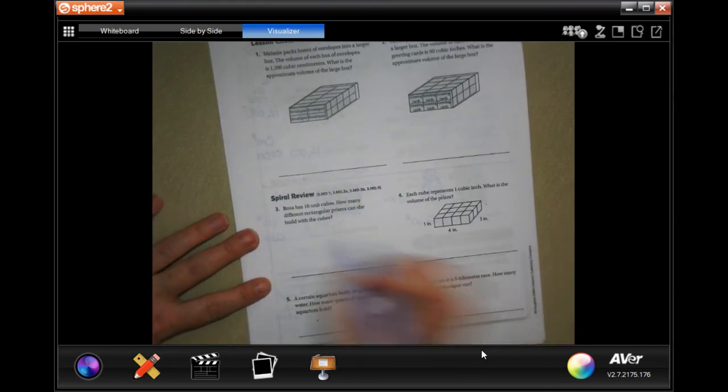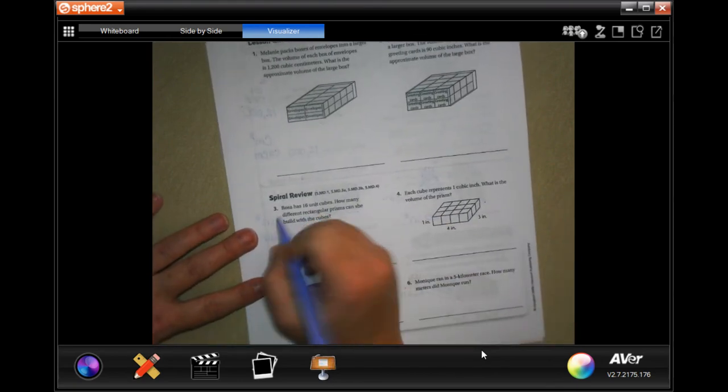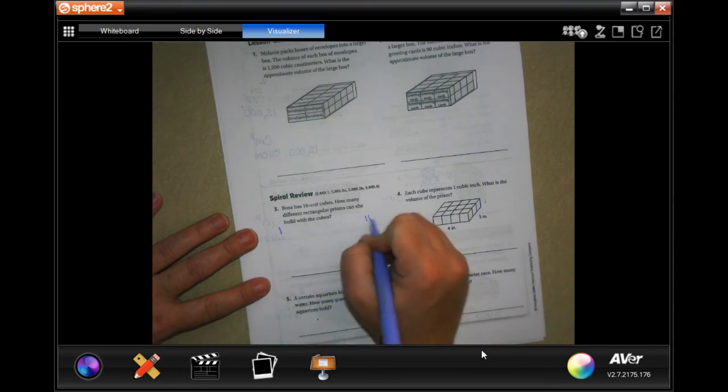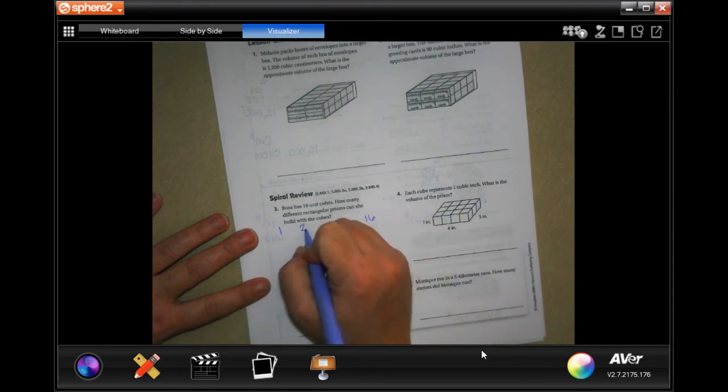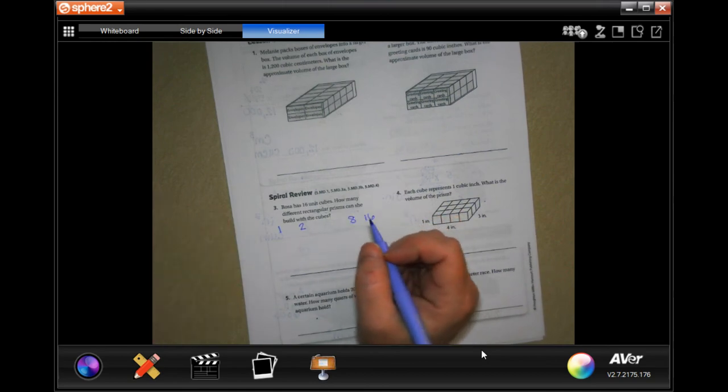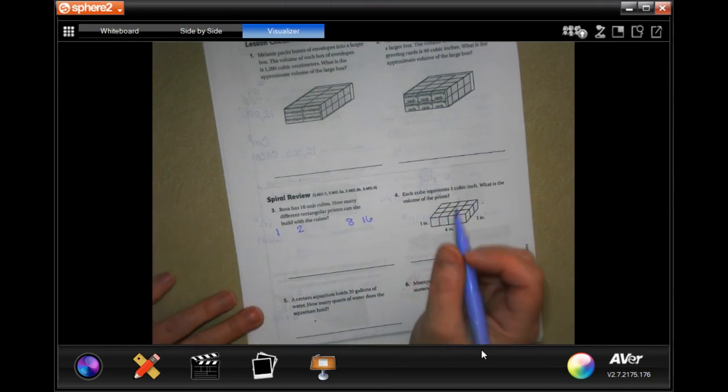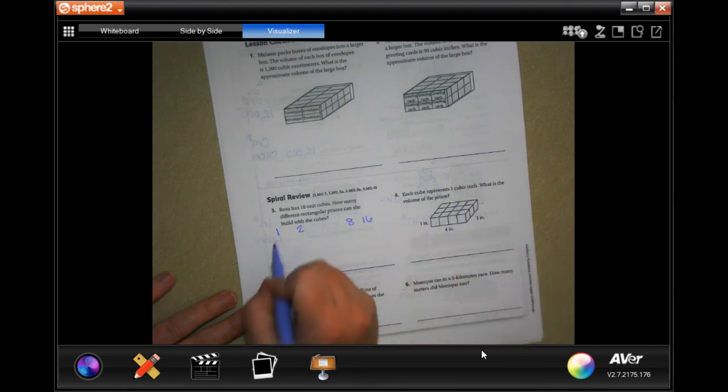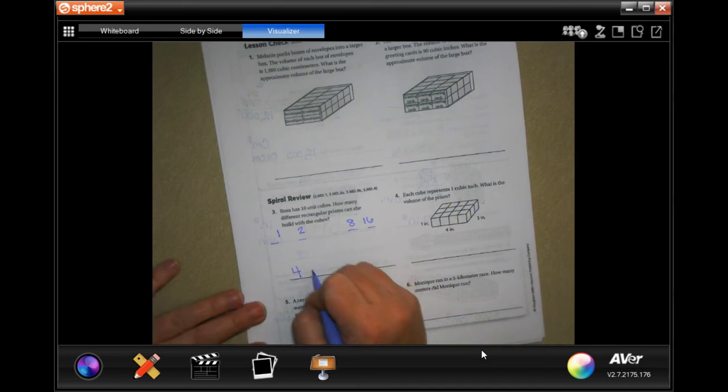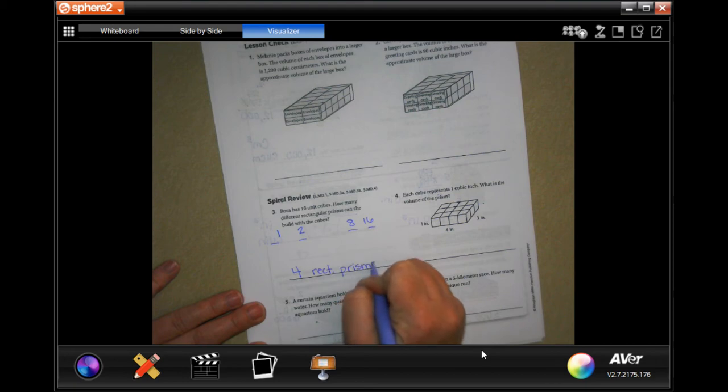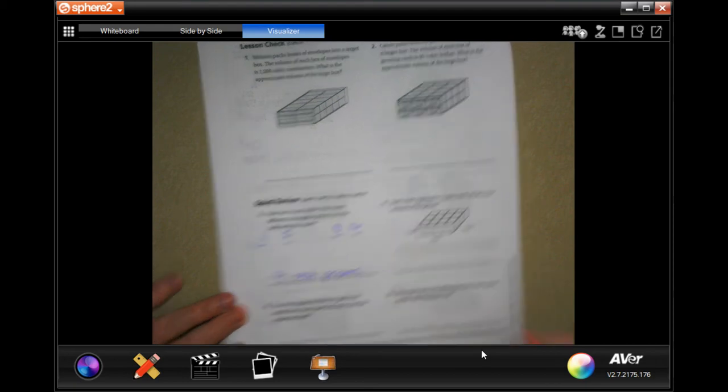Well, so 16. She could do 1 times 16. She could do 2 times 8. And 4 by 4 is actually a square, so she can't do that one. So she could do 1, 2, 3, 4. Four rectangular prisms.